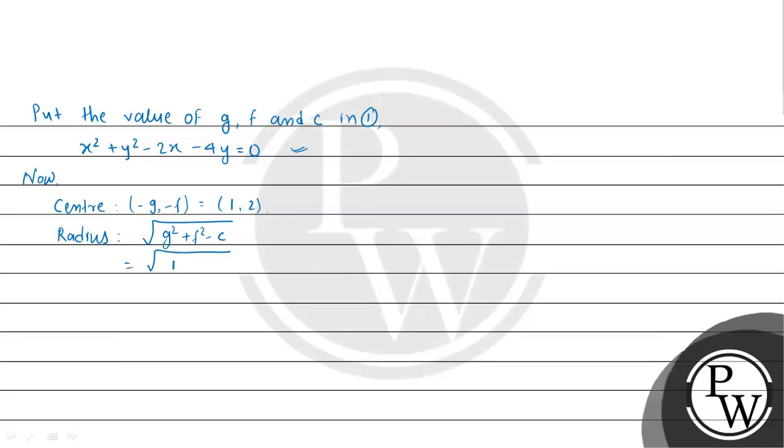The radius is √(g² + f² - c). So g = -1 gives 1, f = -2 gives 4, and c = 0. The radius is √5. Therefore the equation of circle is x² + y² - 2x - 4y = 0,